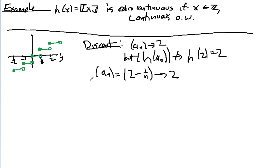We have a sub n that converges to 2. But h of a sub n is equal to h of 2 minus 1 over n. And to figure this out, maybe let's go over here.